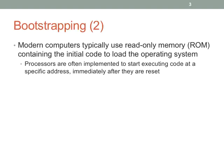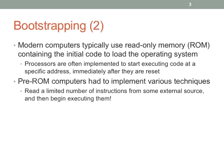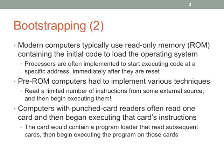Currently we use read-only memory of some kind — though it's a loose definition since it's typically electrically erasable. Something has to be somewhere for the processor to start executing code. You might have wondered how they did it before read-only memory existed. There was a variety of unusual ways people would get these computers started. You have to read some limited number of instructions somewhere and then begin executing them.